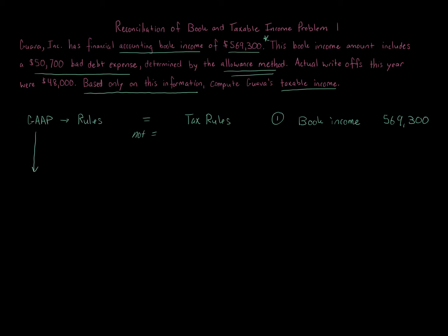Under GAAP, when writing off bad debt, we use the allowance method. We understand that not all accounts receivable will be collected — some become worthless. Under GAAP, we establish the allowance for doubtful accounts at year-end and debit bad debt expense earlier. Under tax, we don't use the allowance method; we use the direct write-off method, which means we record the expense when the specific account is considered worthless and no longer collectible.